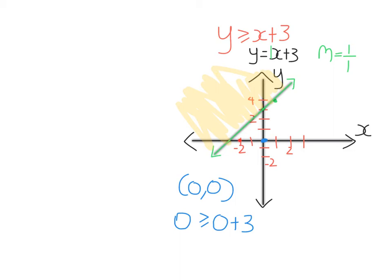For example, you can see the point (minus 2, 4). If I substitute that into the inequality, y is 4 and x is minus 2, I get 4 is greater than or equal to minus 2 plus 3, which is 1. That is a true statement. Every point in this shaded region will satisfy the inequality. So y is greater than or equal to x plus 3 is a whole region — half of the Cartesian plane — with infinitely many points. The line is the boundary of that region.